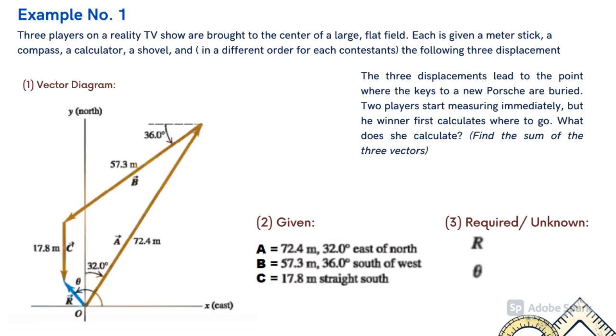Vector A is equal to 72.4 meters, 32 degrees east of north. Vector B is equal to 57.3 meters, 36 degrees south of west. And vector C is equal to 17.8 meters straight south. The unknowns are R and theta.